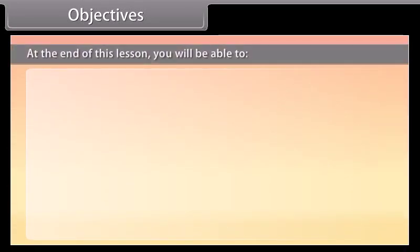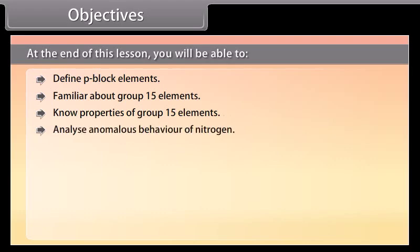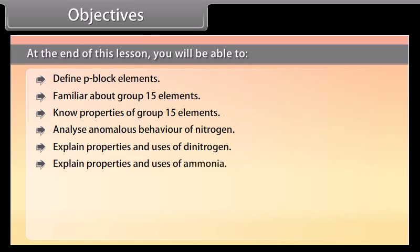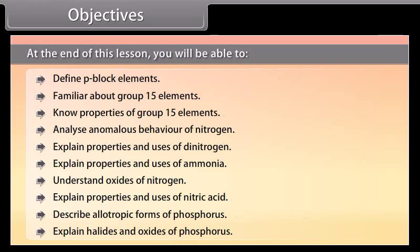At the end of this lesson, you will be able to: define P-block elements; become familiar with group 15 elements and know their properties; analyze the anomalous behavior of nitrogen; explain properties and uses of dinitrogen; explain properties and uses of ammonia; understand oxides of nitrogen; explain properties and uses of nitric acid; describe allotropic forms of phosphorus; and explain halides and oxides of phosphorus.